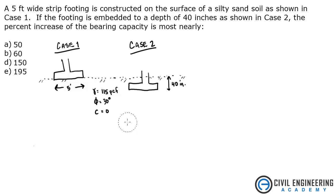Today we're solving a problem from Geotech. The problem states a five foot wide strip footing is constructed on the surface of a silty sand soil as shown in case one. If the footing is embedded to a depth of 40 inches as shown in case two, the percent increase of the bearing capacity is most nearly what?